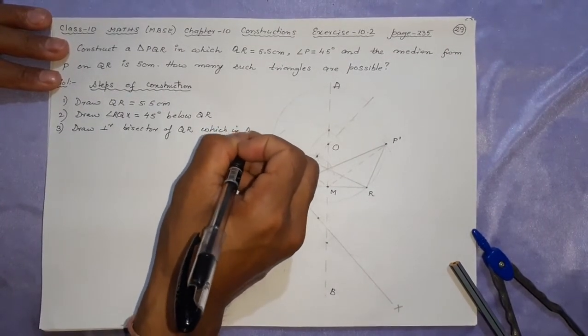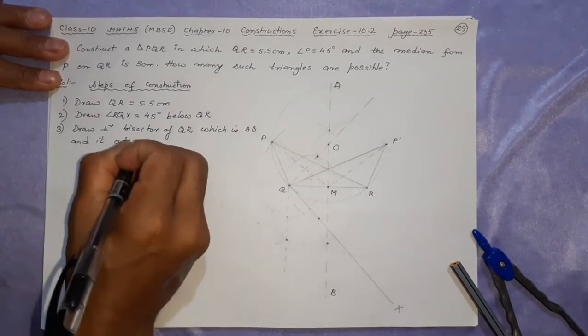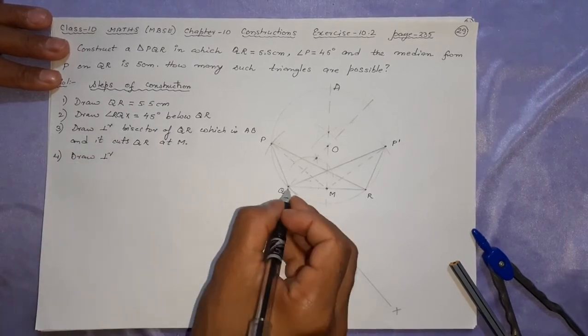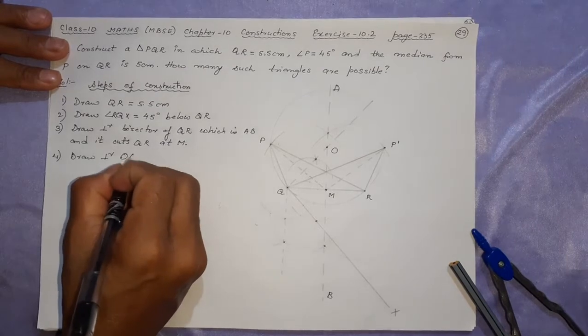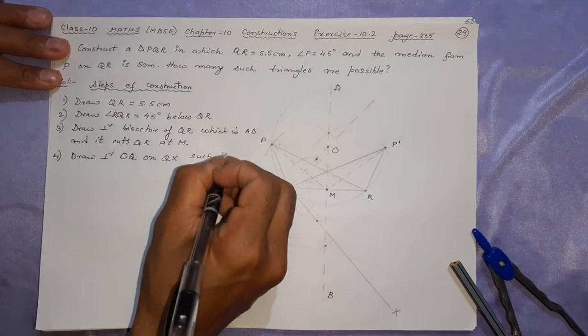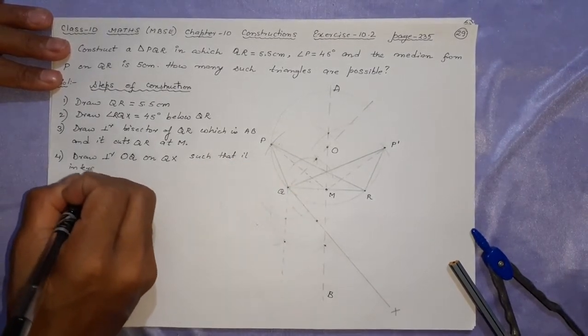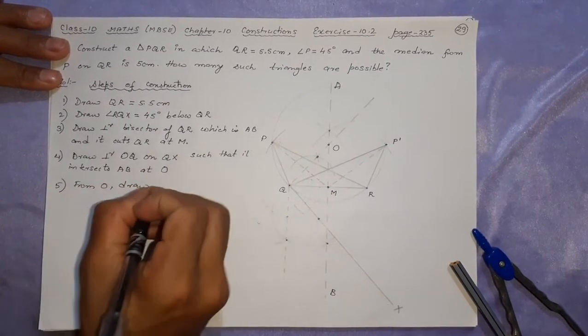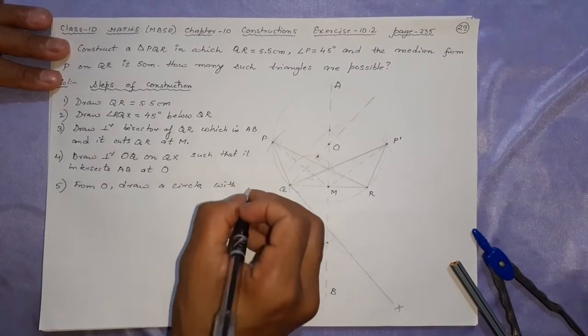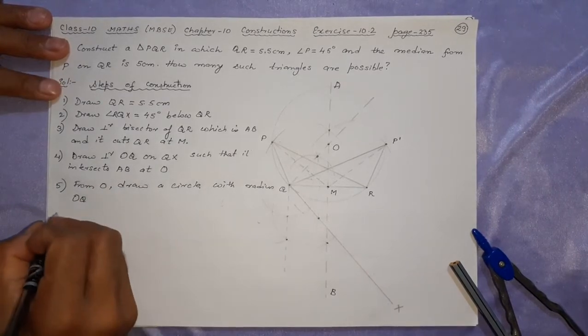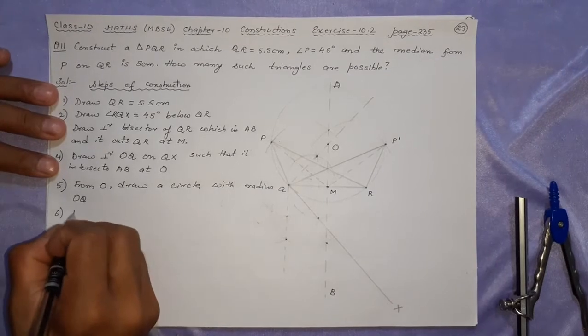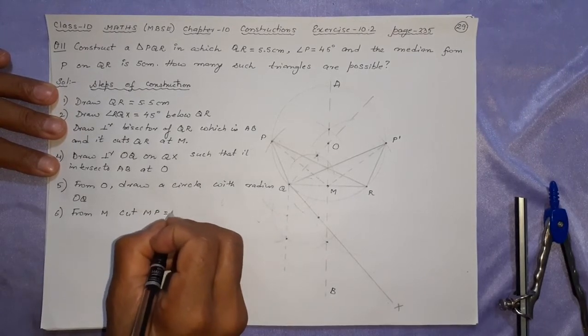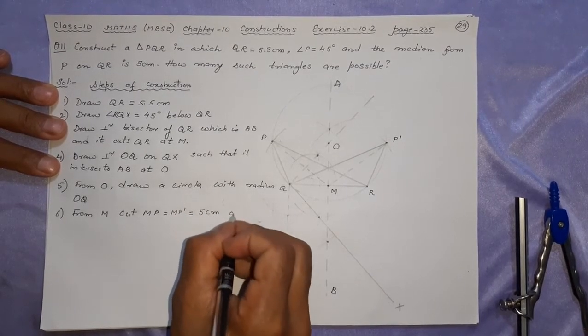The perpendicular bisector of QR, which is AB, cuts QR at M. Number four: draw perpendicular on QX, perpendicular OQ on QX, such that it intersects AB at O. Next step: from O draw a circle with radius OQ. After that, from M cut MP equal to M P dash equal to 5 centimeters on the circle.